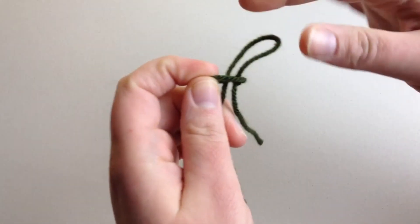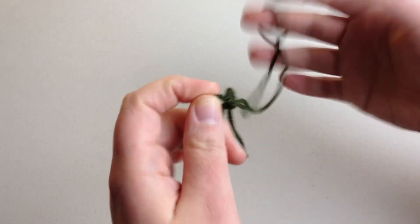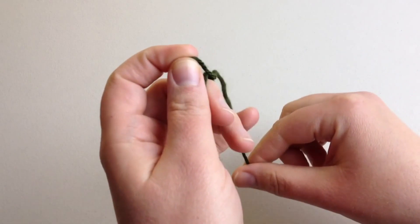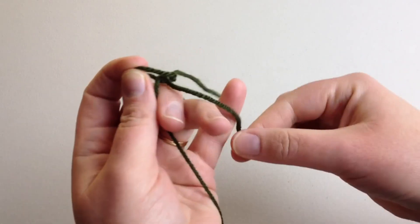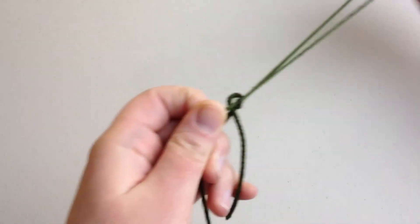We continue to pull on this working strand. You can hold on to this extra strand here, the straggler, between your fingers and keep pulling on the working strand, making it longer.